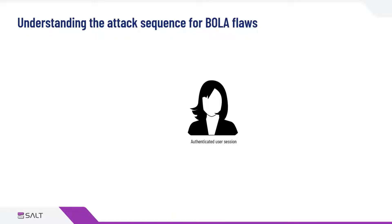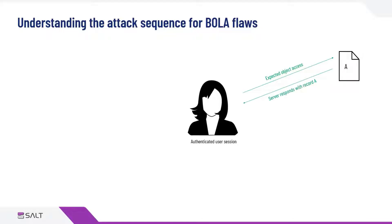As a normal user, the normal expected flow is that I'm going to request some piece of data or object — we're talking about objects or data identifiers. The normal expected behavior is that the user is going to request a specific record, in this case record A, and then the server is going to respond with that record or data to the API caller.